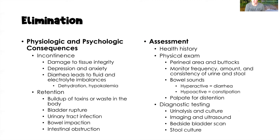There are many physiologic and psychological consequences of incontinence and retention. For incontinence, we can see damage to tissue integrity — as stool or urine touches the skin, especially for lengthy periods, we see impaired tissue integrity. Depression and anxiety can also result from the inability to control bowel or bladder habits. Adults needing to wear incontinence products can experience significant emotional distress, which can induce depression or anxiety. Diarrhea can lead to fluid and electrolyte imbalances, particularly fluid volume deficit and hypokalemia.